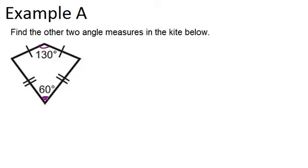Now, one property of a kite is that the non-vertex angles, which would be these angles, are always congruent. So that means that they will be the same measure.